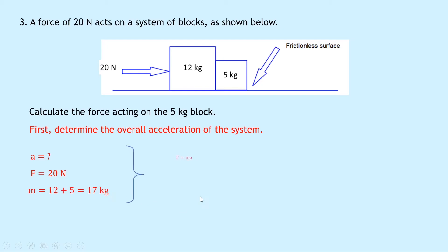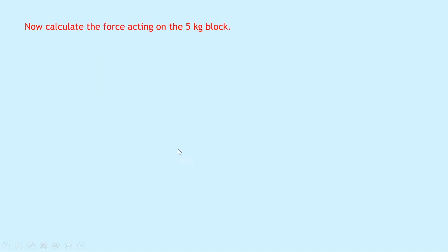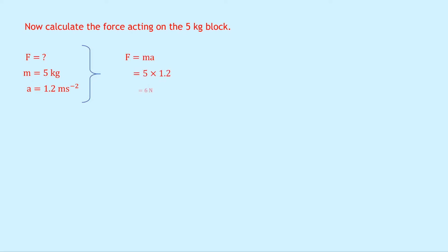Using F equals MA, rearranging for A gives A equals F over M. Substituting: 20 divided by 17 equals 1.2 meters per second squared. Now we calculate the force on the five kilogram block specifically. Using the mass of five kilograms and the acceleration of 1.2 meters per second squared, and applying Newton's second law again — F equals MA — we get five times 1.2, giving a final answer of six Newtons.